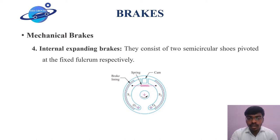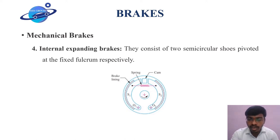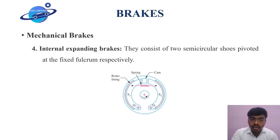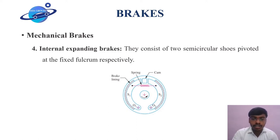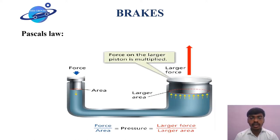To summarize: the internal expanding brakes consist of two shoes, S1 and S2. These two shoes are pivoted at one end at O1 and O2. On the other end, a cam is arranged; when this cam is rotated, the two shoes move outward. A spring is arranged between the two shoes to keep them in the rest position. The entire assembly is enclosed to avoid the formation of dust and moisture inside the brakes.